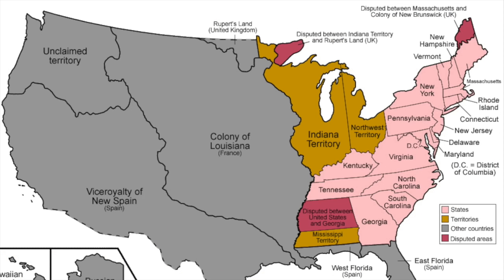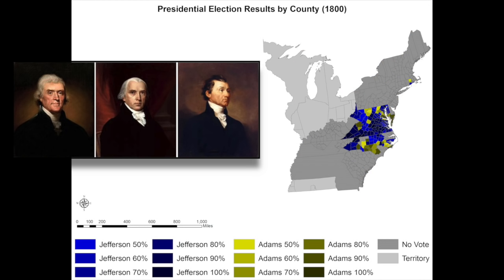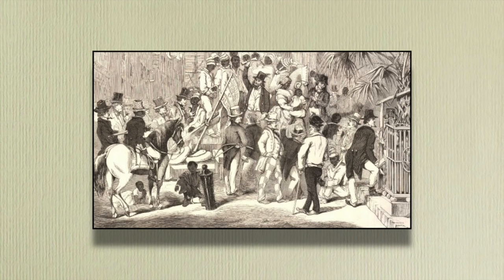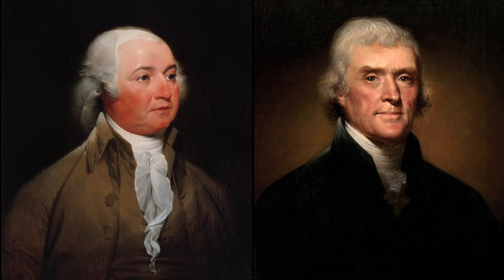This election was significant because it was the first peaceful transition of political power between opposing parties in American history. It was also a turning point — it marked the beginning of a generation of Democratic-Republican party rule and the decline of the Federalist Party, who would never again have a President in office. The result of this election was also affected by the Three-Fifths Compromise. Had slaves not been counted for purposes of Congressional apportionment, Adams would have beat Jefferson. However, Jefferson still would have won the popular vote.